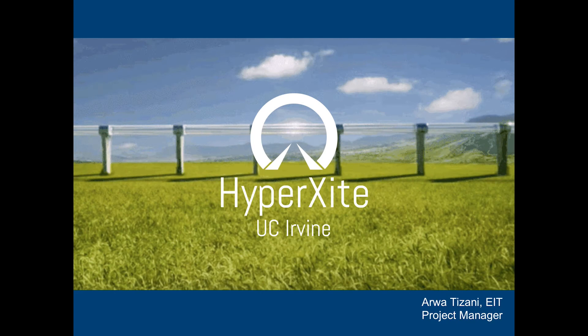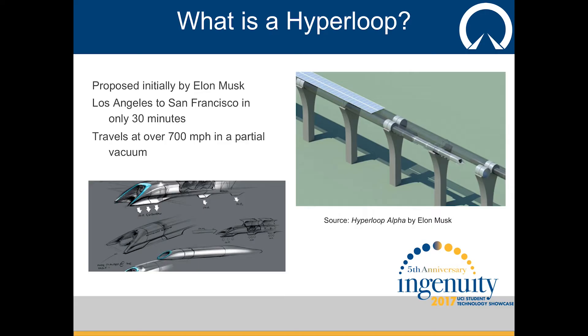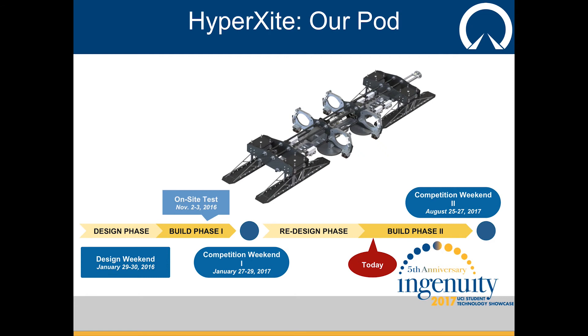Good afternoon, everyone. My name is Arwa Tizani, and I'm the project manager of the HyperXcite team here at UC Irvine. We're a team of undergraduate engineering students building a pod for the SpaceX Hyperloop pod competition. For those who don't know, a Hyperloop is a concept originally proposed by Elon Musk — essentially a high-speed train in a vacuum that travels from San Francisco to Los Angeles in under 30 minutes at a top speed of 760 miles an hour. The most amazing feature of our design is the four air levitation skis located in the front and back of our pod that allow us to coast through the tube by hovering over a cushion of air.